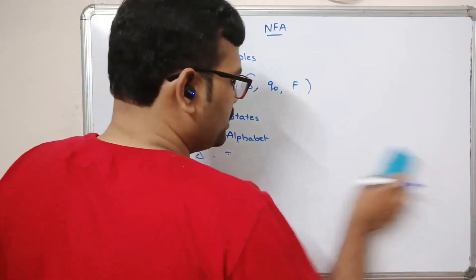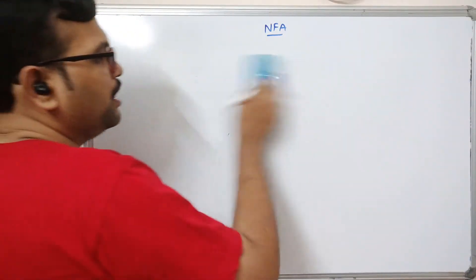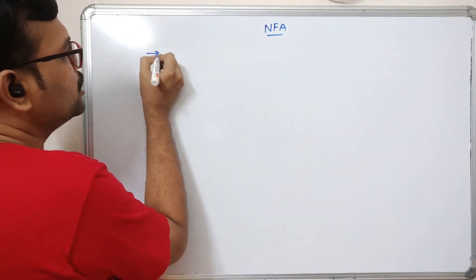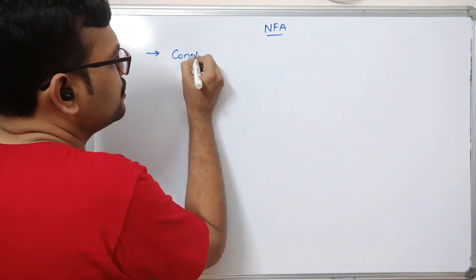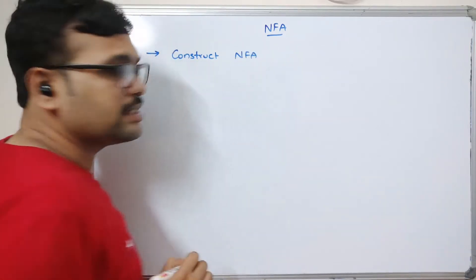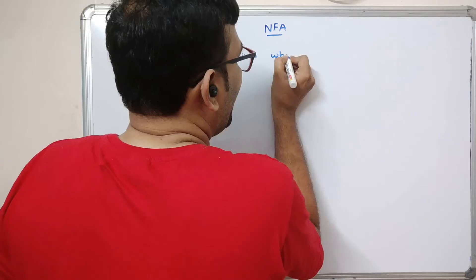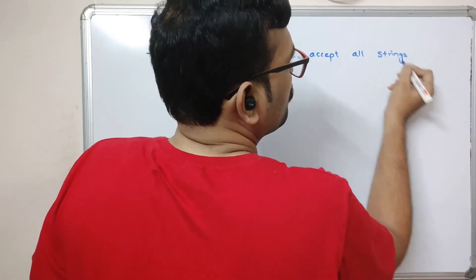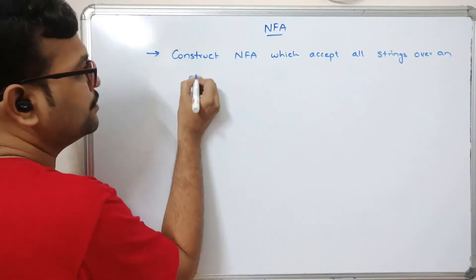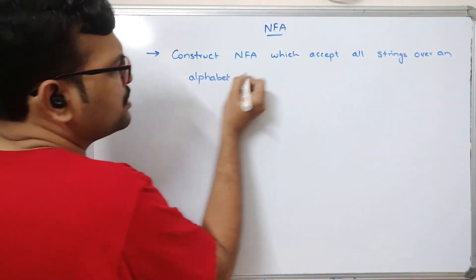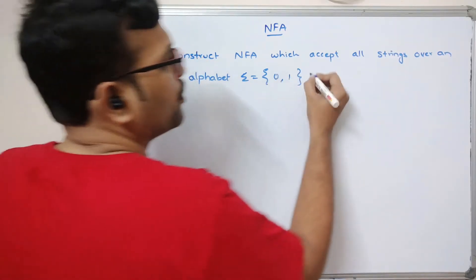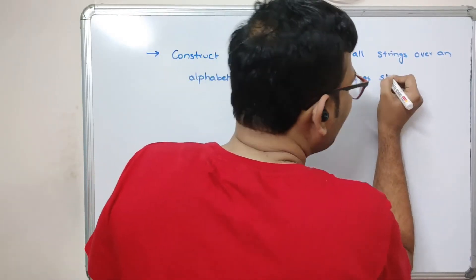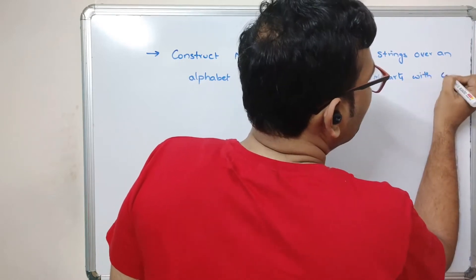Let us take one example. It is very simple to construct an NFA compared to a DFA — I'll explain why. The problem statement is: construct an NFA which accepts all strings over alphabet sigma = {0, 1} where strings start with '01'.